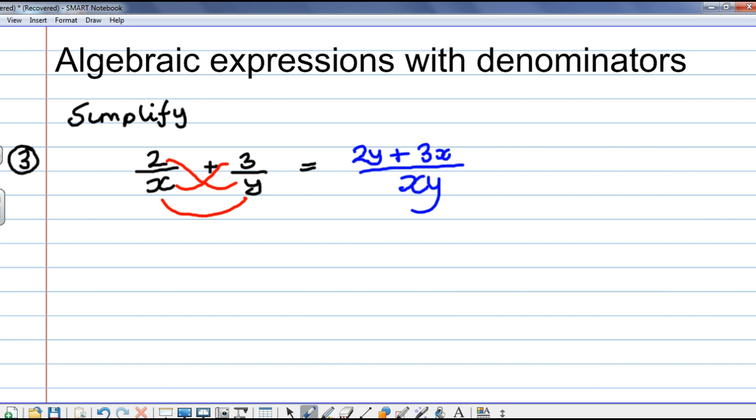You can't simplify it because we've got y terms and x terms. I mean, strictly speaking, the convention is we put them in ascending alphabetical order. So, you could rewrite that as 3x plus 2y all over xy.